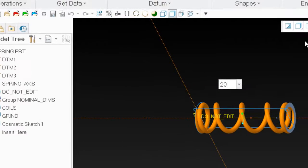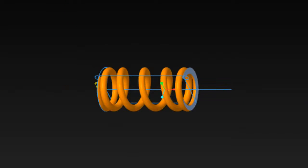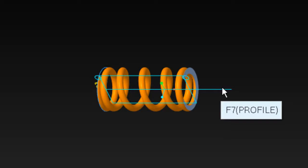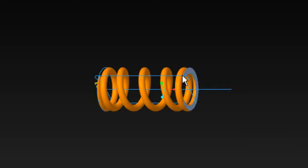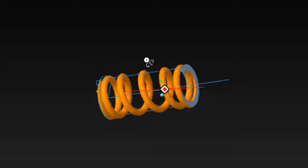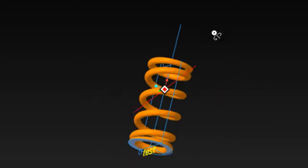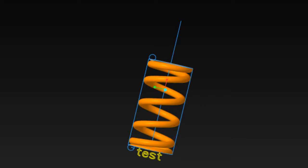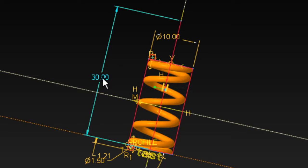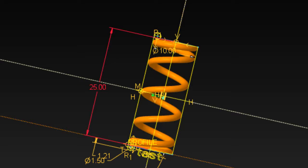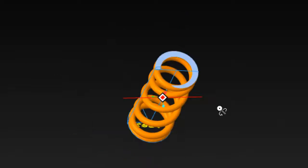If I change that to 20 and regenerate, look - nominal height stays. That's what's going to happen in the assembly: nominal height will stay. That's how we're going to do flexibility and drive this. So let's go ahead and recreate a new spring - we're going to change nominal to 25 and regenerate.